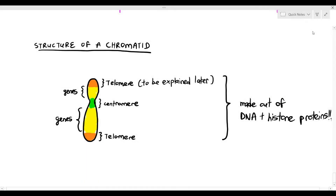In one of the earlier videos, we were looking at the structure of the chromosome and we noticed that the chromosome has a few different structures. They have the centromere, telomeres and the genes. In that previous video, I said that we will be talking about the telomere in a later time. That time has now come.